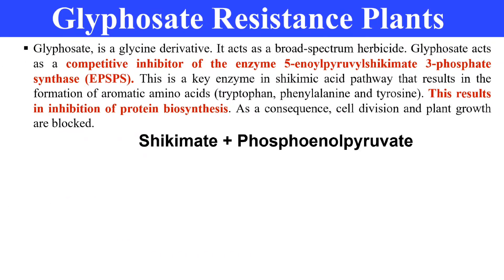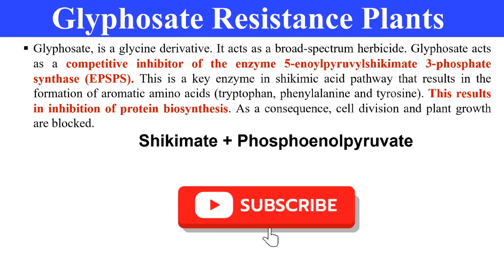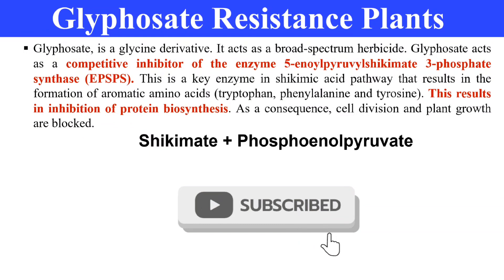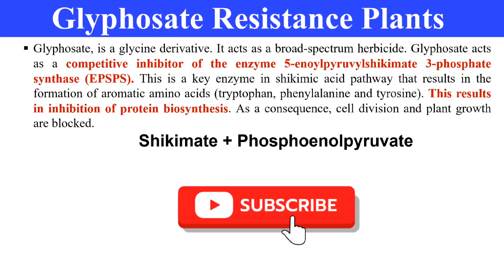Today we're discussing glyphosphate resistance in plants — how we can make a glyphosphate-resistant plant. Glyphosphate is a chemical that acts as a herbicide. It kills weeds, which are unwanted plants. It is a broad-spectrum herbicide and is also the most commonly used herbicide.